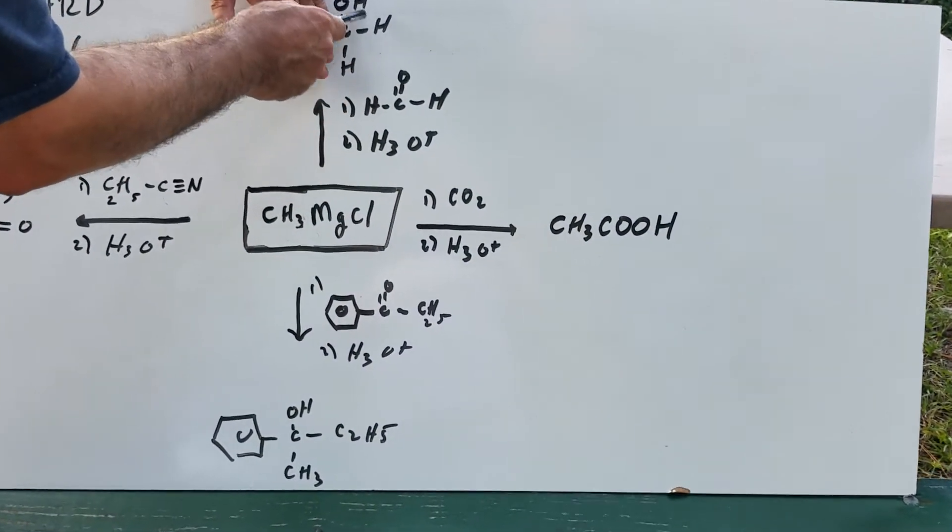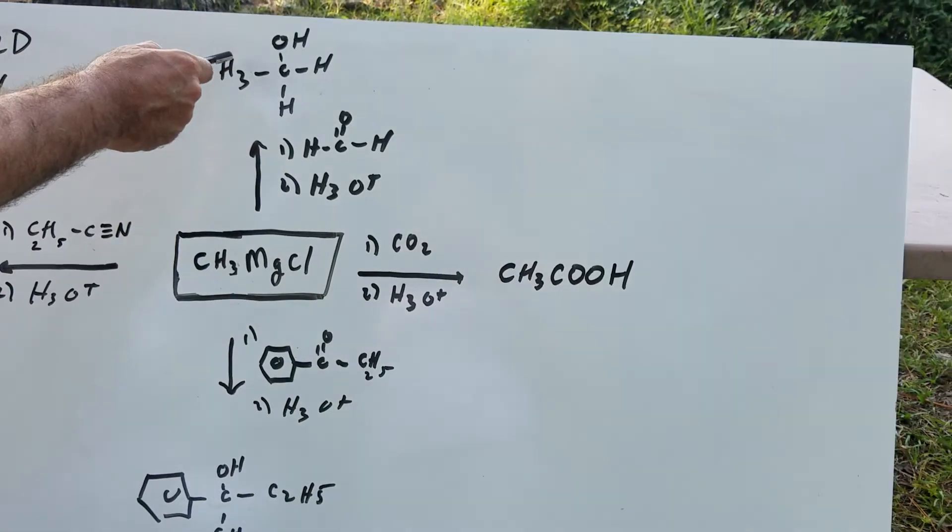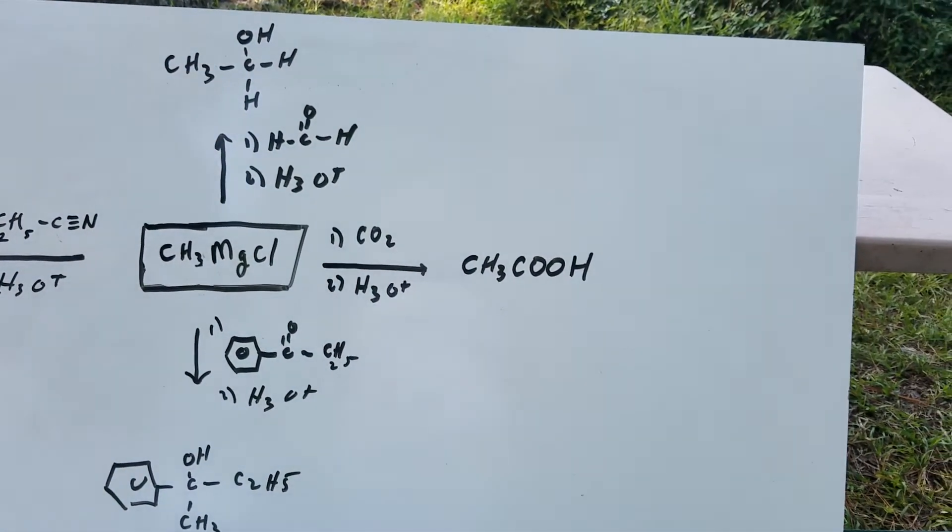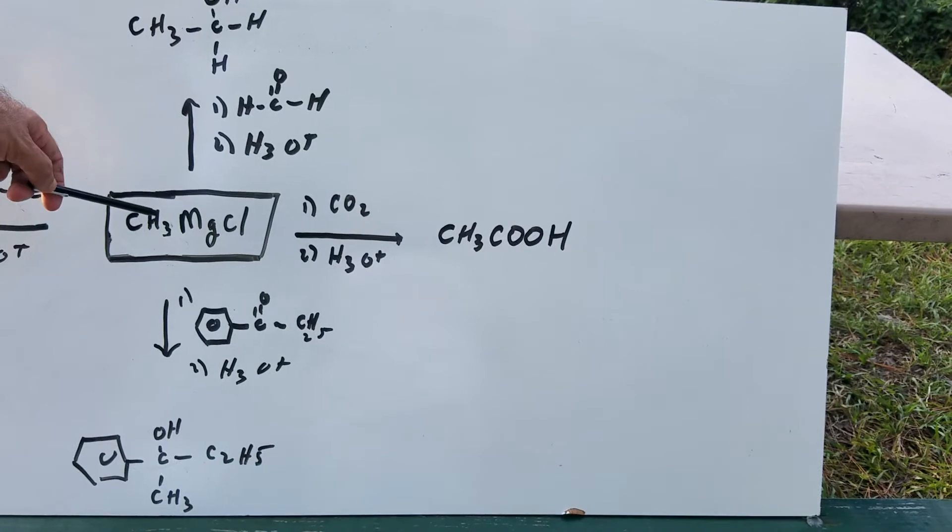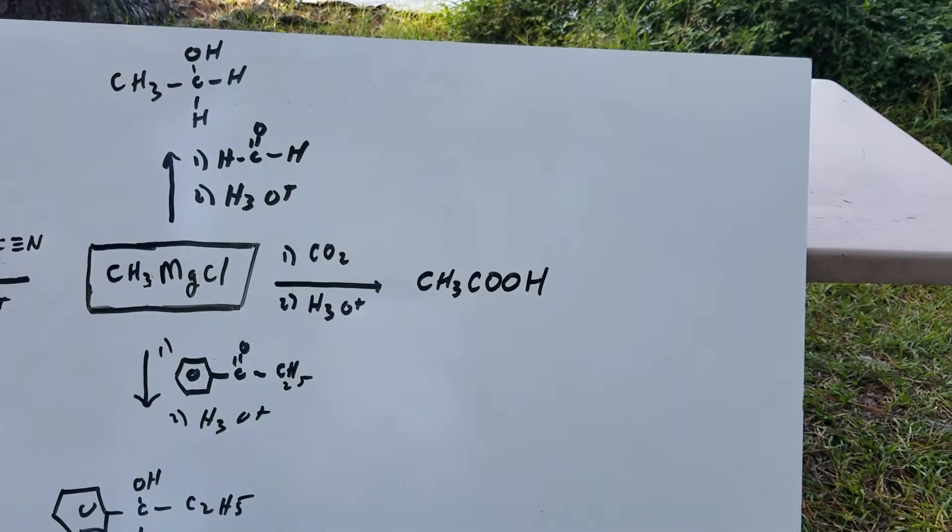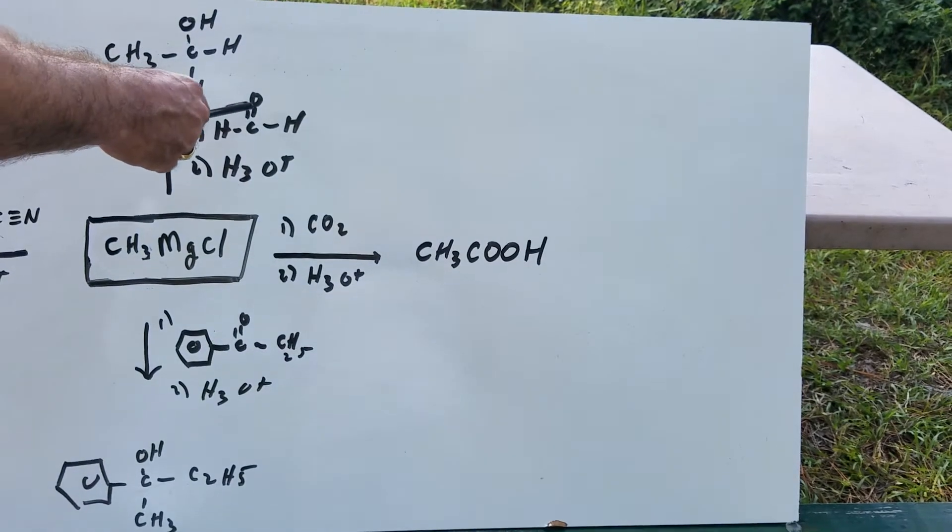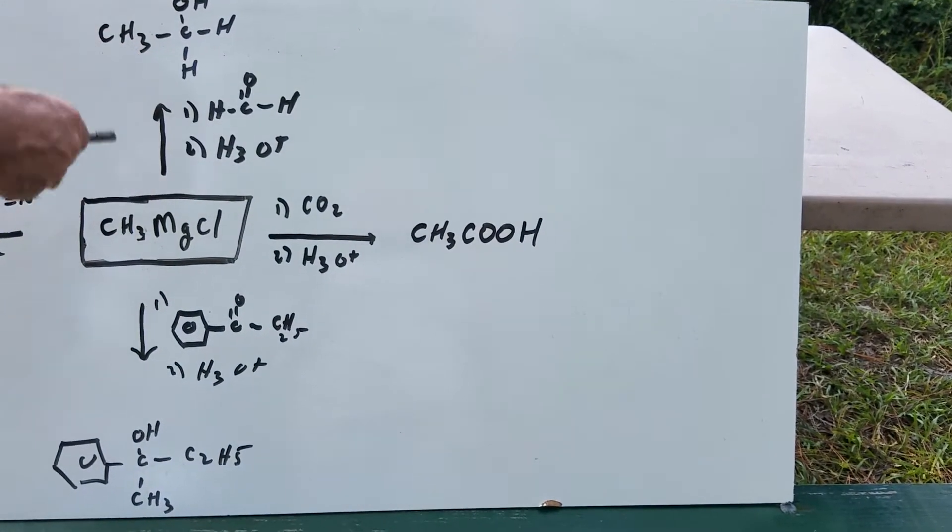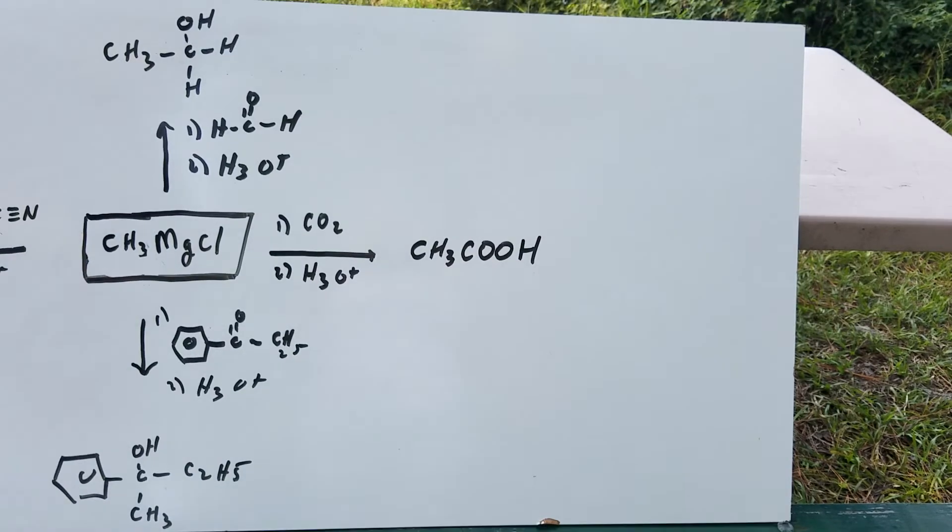the double bond O becomes an OH, and then you simply add on the Grignard. Hopefully you can see what I've done. You've gone from a Grignard into a primary alcohol with one extra carbon. I open up the double bond, make it into an OH, and this carbon simply gets the carbon from the Grignard.